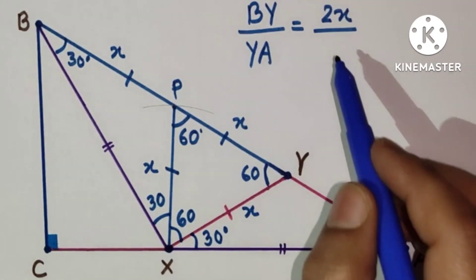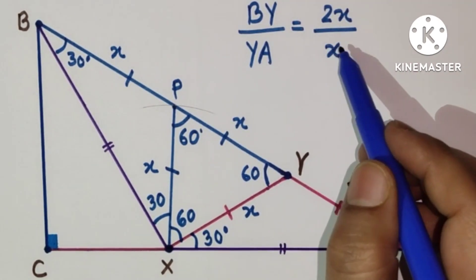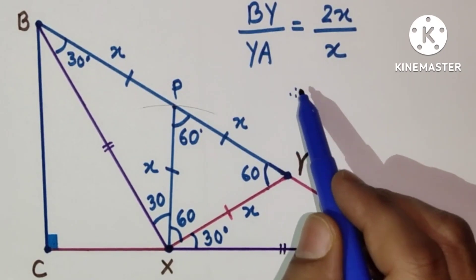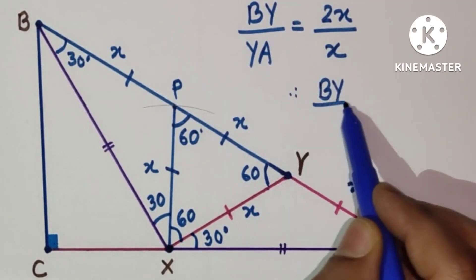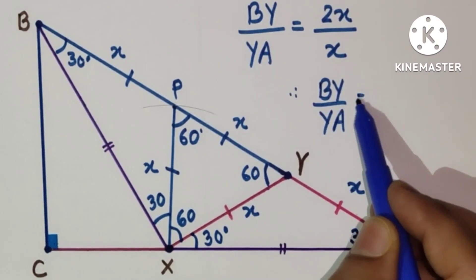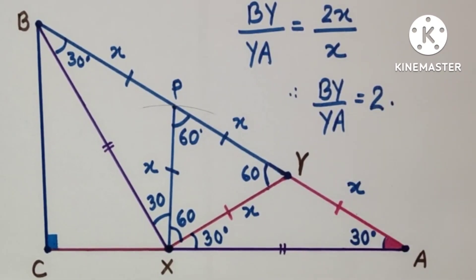And YA is X. The X's will cancel. So therefore we can say finally that BY by YA is equal to 2. And this is the required answer.